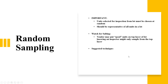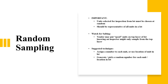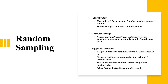Be aware that a vendor may put good units on the top layer knowing an inspector might only sample from there. The suggested technique is to assign a number to each unit or use the location of units in a lot. Generate a random number from each unit location in the lot, record it, and sort by random number to get the lot-location pairs. Following these attributes during random sampling will make your experiment more accurate.